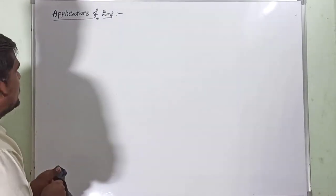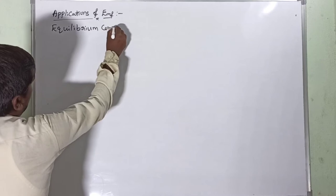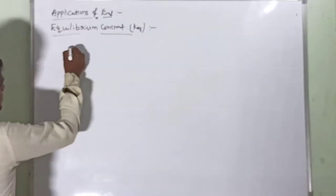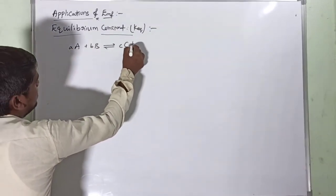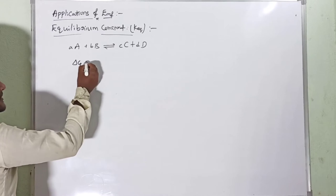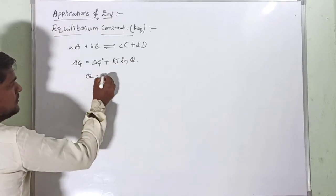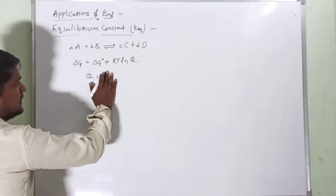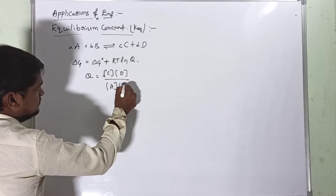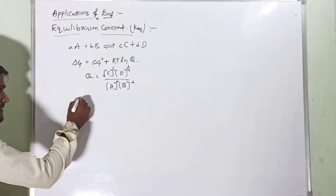So today we are dealing with the equilibrium constant, simply called K equilibrium. The reaction is: aA + bB → cC + dD. According to thermodynamics, ΔG = ΔG° + RT·ln(Q), where Q is the reaction quotient — concentration of products divided by concentration of reactants.